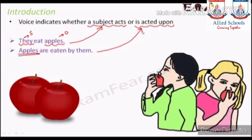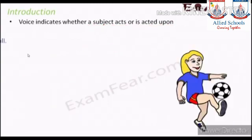Consider two children who are eating apples — 'they' refers to these children. The apple is the object because it is the receiver of the action. The doer of any action is called the subject, and the receiver of any action is called the object.